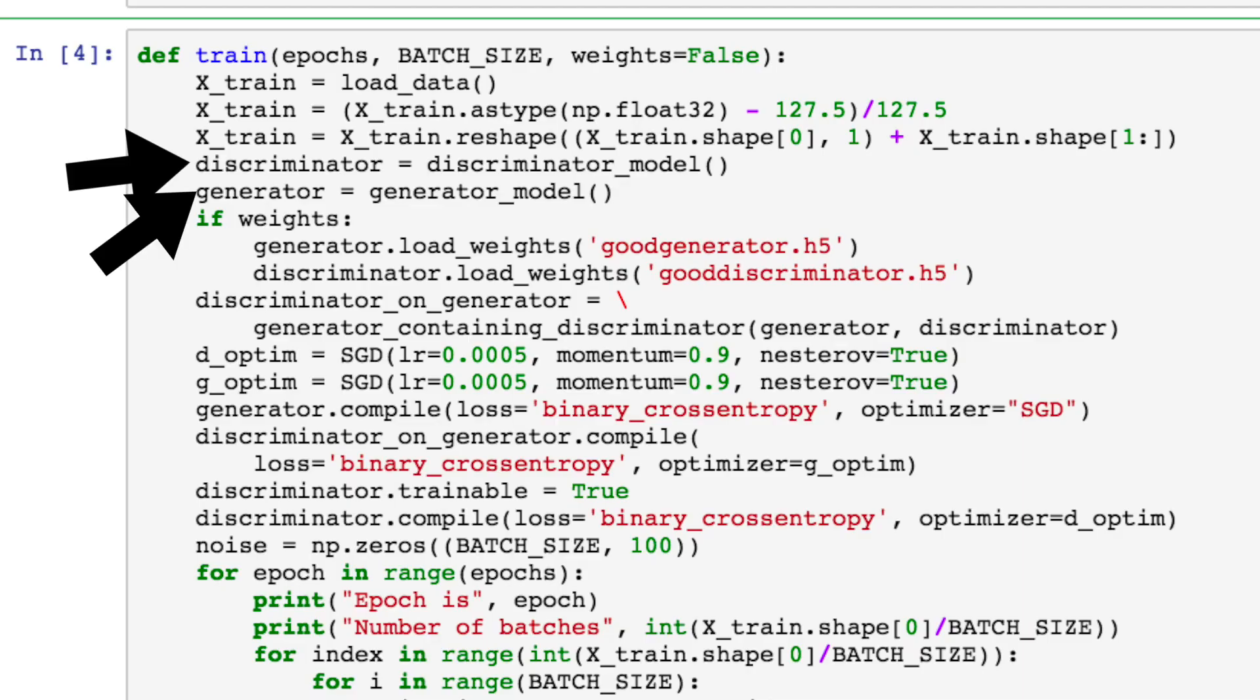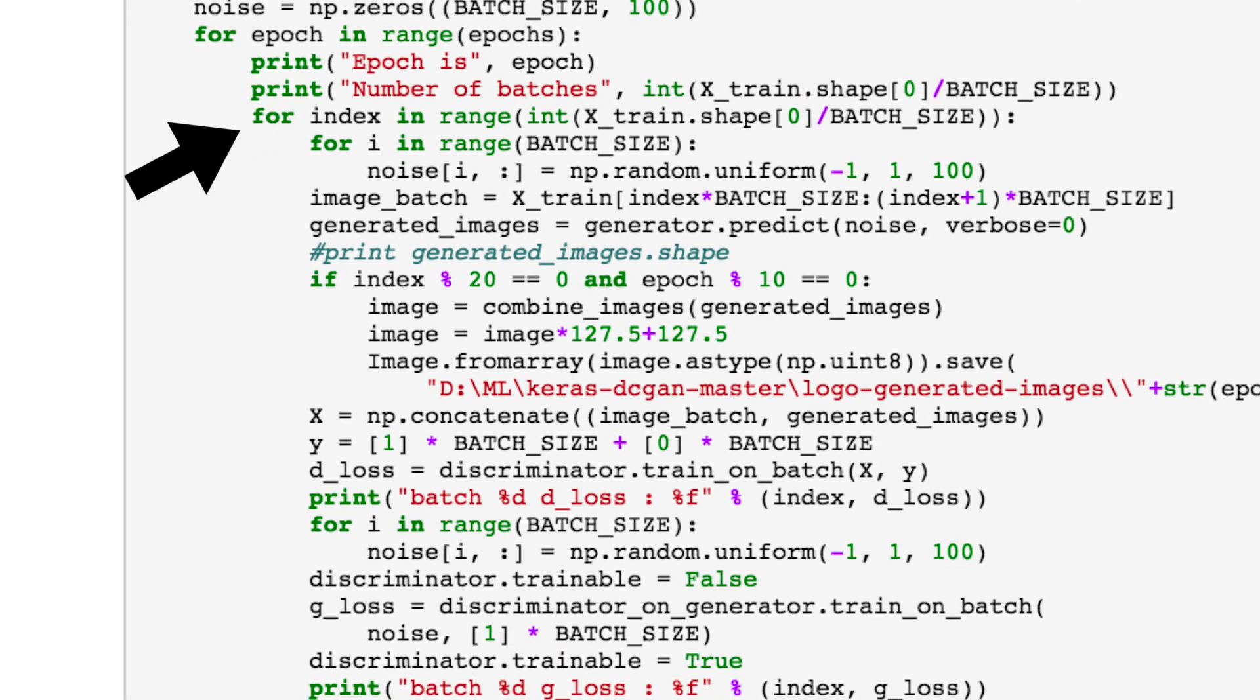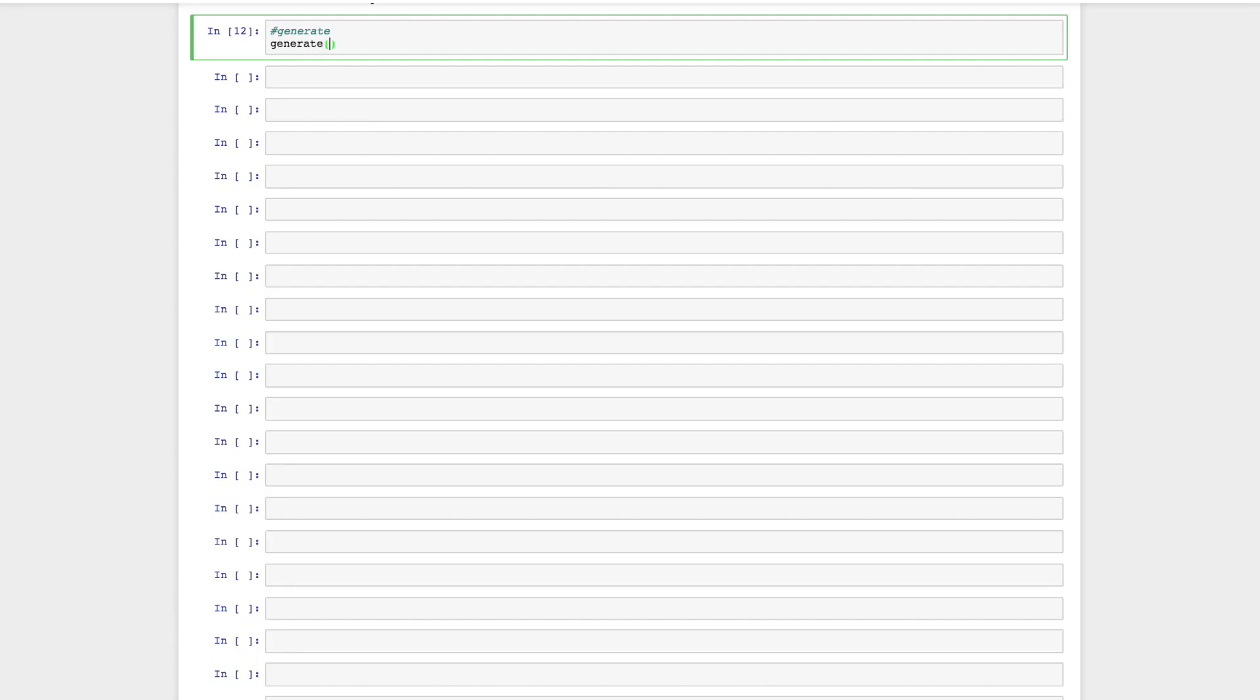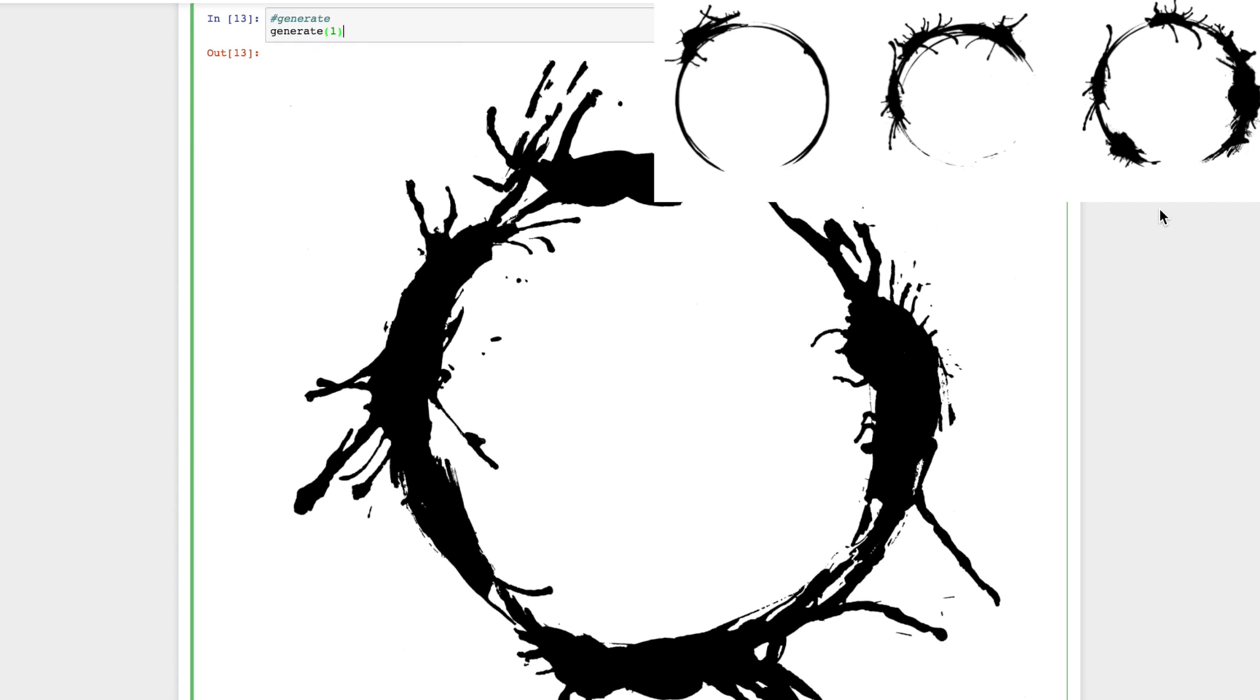We'll load our data and initialize both of our models in our train function. Then we'll combine them both and initialize stochastic gradient descent optimizers for both of them. We'll define a loss function, binary cross entropy, then perform the set of steps outlined in the paper. For every time step, we sample data from both distributions, then update D using our gradients. Then we update G using our gradients. Once we're done training, we can generate some images from G, and we'll see that they do indeed look pretty similar to our other images.